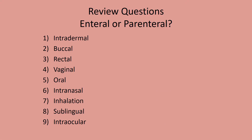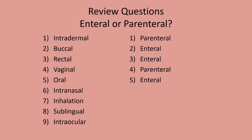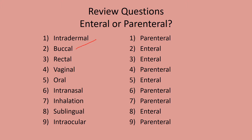Enteral or parenteral? You only have to remember those four. Intradermal — parenteral. Buccal — yes, one of the four, enteral. Rectal — part of the GI tract, yes, enteral. Vaginally — not part of the GI tract, parenteral. Orally — absorbed in the stomach, the GI tract, enteral. Intranasal — not part of the GI tract, parenteral. Inhalation, lungs — parenteral. Sublingual — part of the GI tract, enteral. Into the eyes — parenteral. So just remember the four: buccal, rectal, oral, and under the tongue.